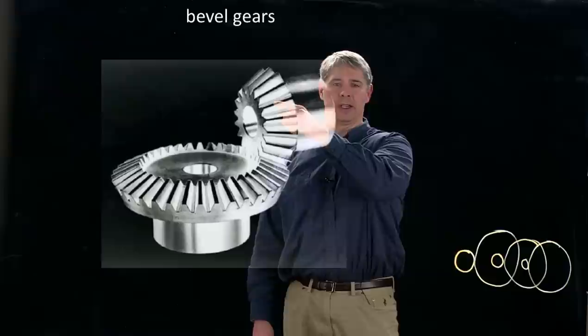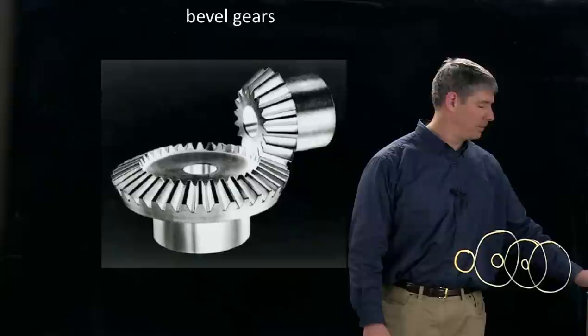These are bevel gears, so if this is the input gear here, then the output gear here not only is spinning more slowly, but it's also 90 degrees offset.